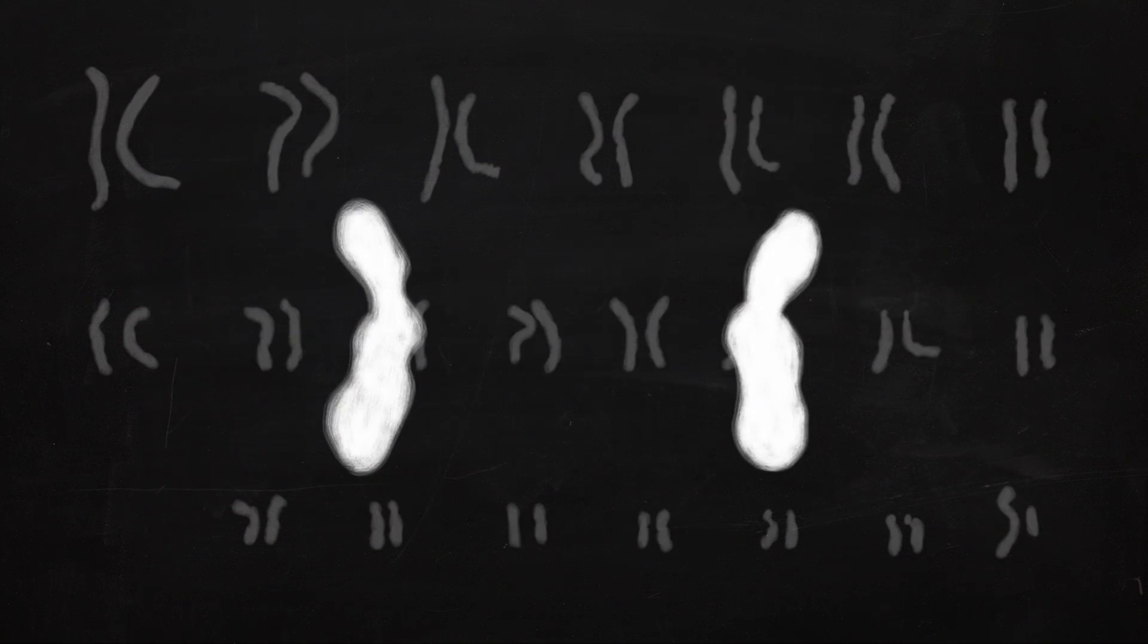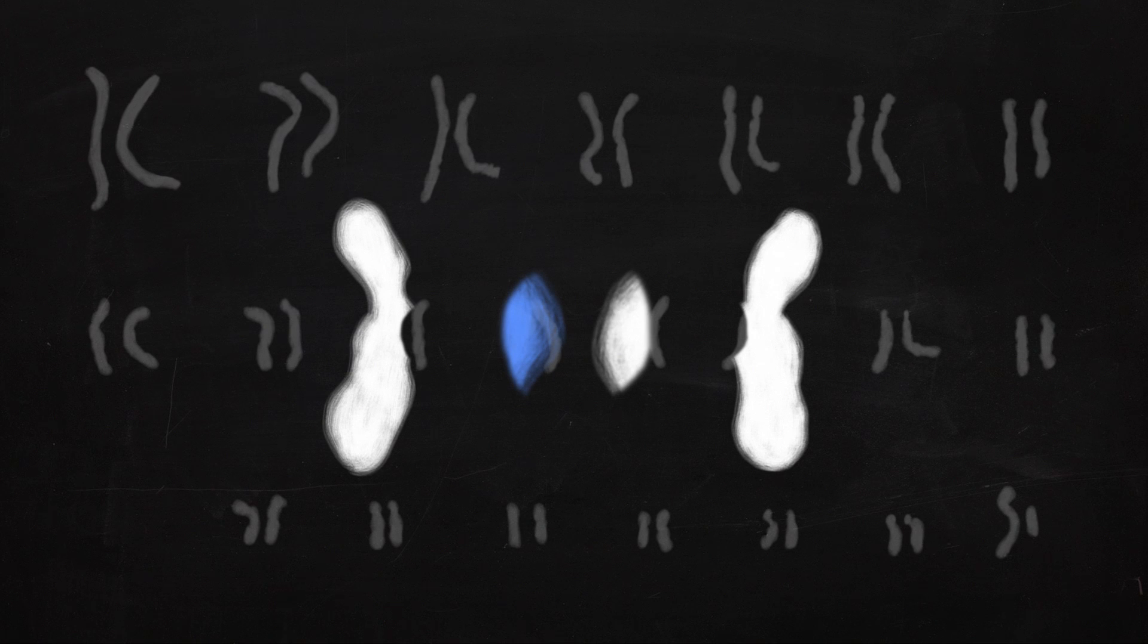But each chromosome of the pair will code for the same things. So like here and here will both be the gene for earwax consistency, but they're different versions of that gene. Maybe one allele makes earwax more liquid and the other allele makes your earwax more solid. An allele is a different form of a given gene. So in this example we have the gene for earwax consistency with two versions or two alleles of that gene.